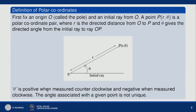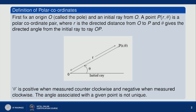R is the distance OP and θ is the angle which OP makes with the initial line. θ is positive when measured counter-clockwise and negative when measured clockwise. The angle associated with a given point is not unique — we will discuss this afterwards.